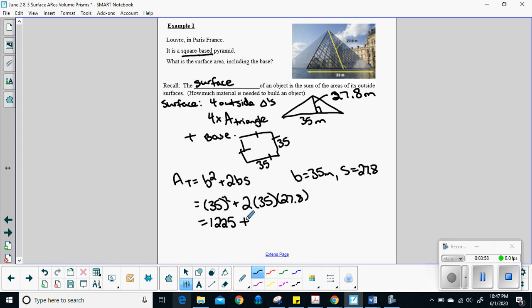So 35 squared, what does that give you? 1,225 plus 2 times 35 times 27.8 gives me 1946. Add those up, and you get 3,171 meters squared. So my total surface area is a meter squared.